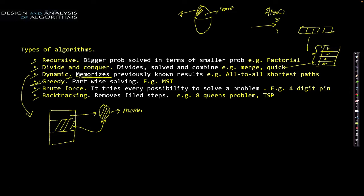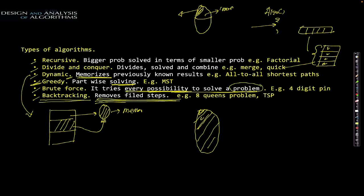Another category is the greedy algorithm, which solves the problem part by part — smaller parts are solved first, and then it incrementally moves to higher parts. The bigger problem is divided into smaller ones, and a small part is solved; once that part is solved, it moves to the second part, and so on until the entire problem is solved. Brute force tries all possibilities and removes the failing steps — it tries one possibility, and if that possibility cannot solve the problem, it is removed and another possibility is tried.